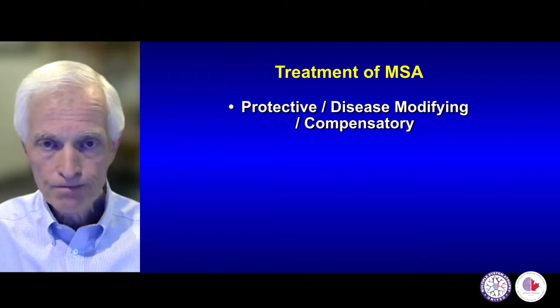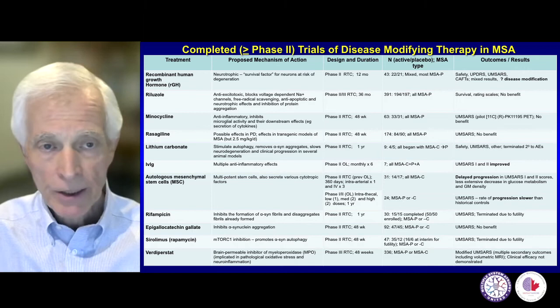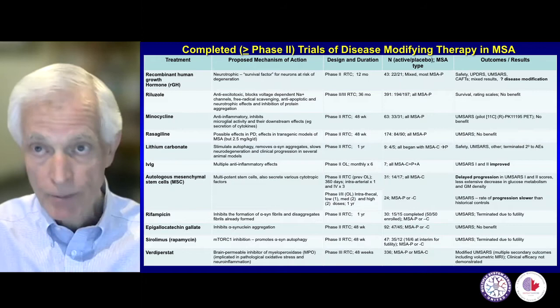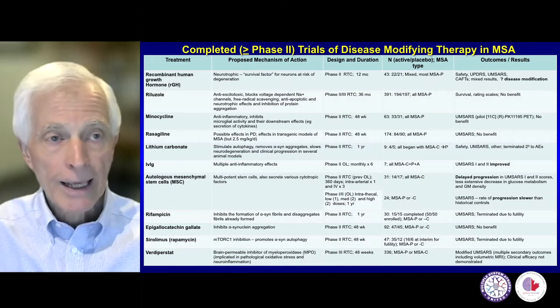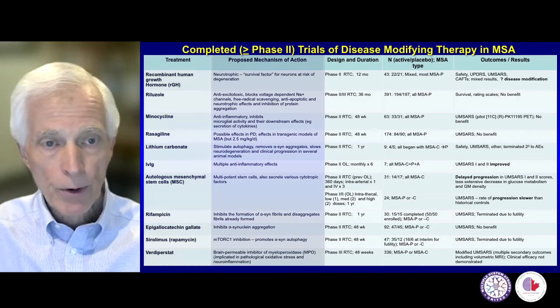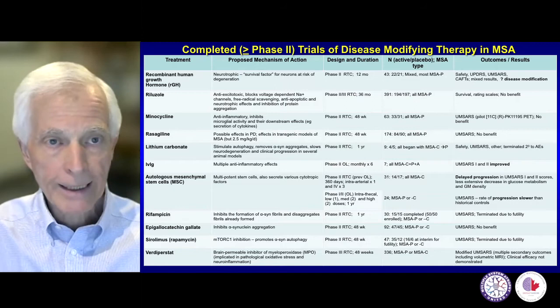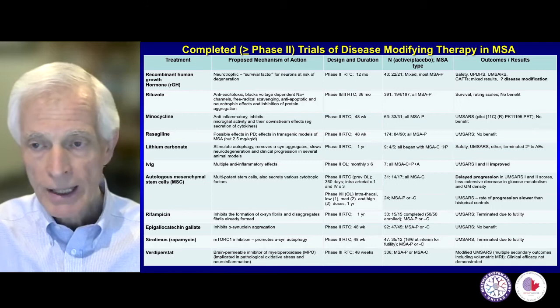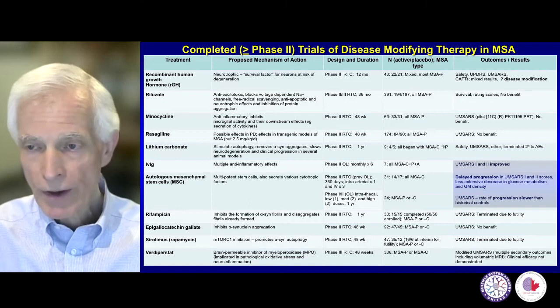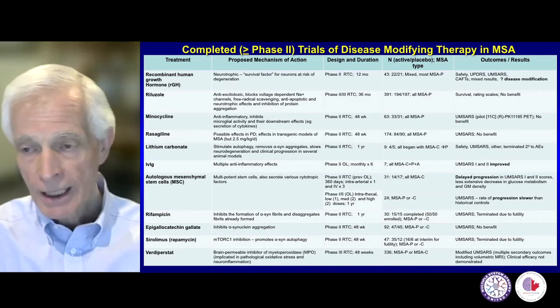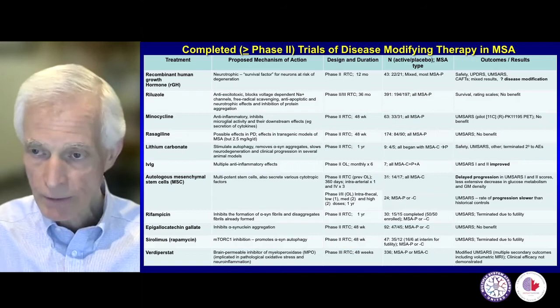This is a large, complicated table showing completed trials that have reached phase two or three — human patients in larger numbers, often randomized placebo-controlled trials using a variety of drug treatments. You can see different treatments with proposed mechanisms of action: neurotrophic or growth-promoting, anti-excitotoxic, anti-inflammatory, stem cells, etc. Unfortunately, the vast majority of these trials have been negative. I've bolded those where there was some suggestion of an effect on disease modification; the effects have been mild, interesting, and need further confirmation, but on the whole these treatments have been unsuccessful.